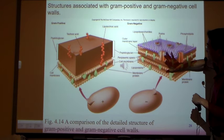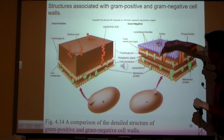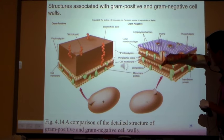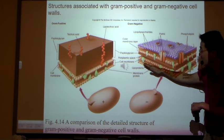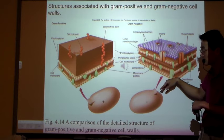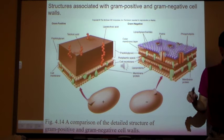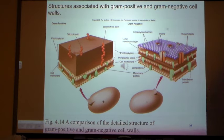So there are two layers of cell membrane. There are also some porins that allow things to pass through, and they also have an inner cell membrane. This is the fundamental difference between these two types of bacteria: gram-positive versus gram-negative.